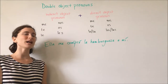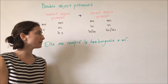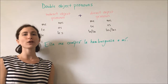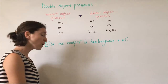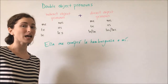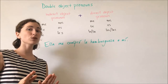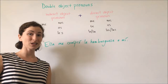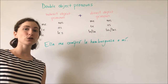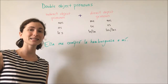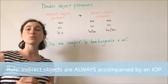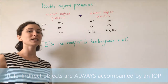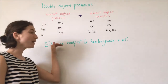If we have the example 'Ella me compró la hamburguesa a mí,' we can shorten this sentence by using our direct and indirect object pronouns. We already have an indirect object pronoun, because remember, if we have an indirect object in Spanish, we must also have an indirect object pronoun in that sentence. There are no ifs, ands, or buts — you must have an indirect object pronoun if there is an indirect object in that sentence.